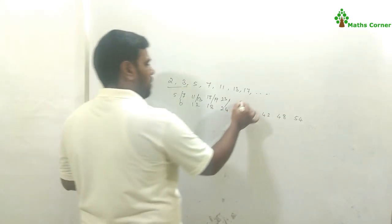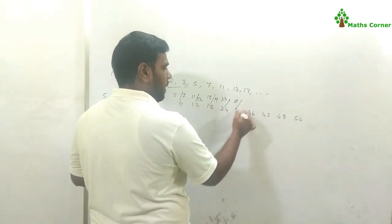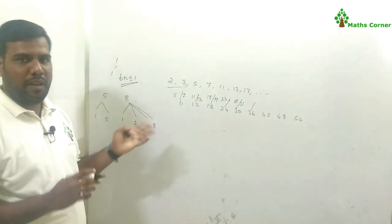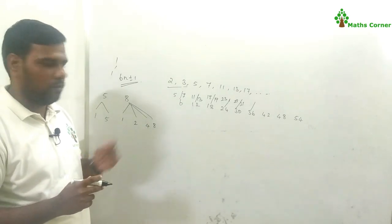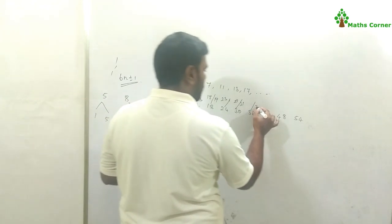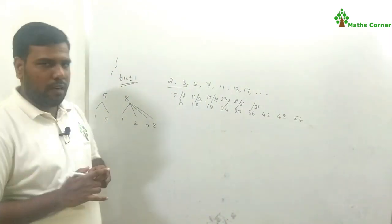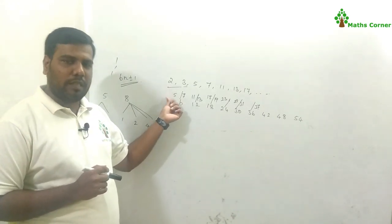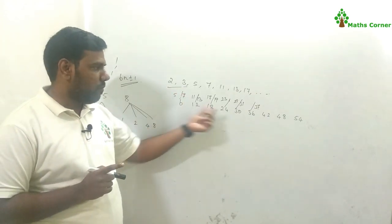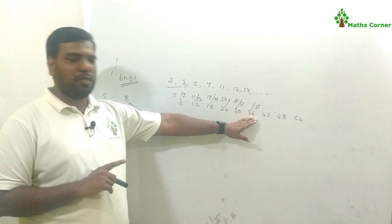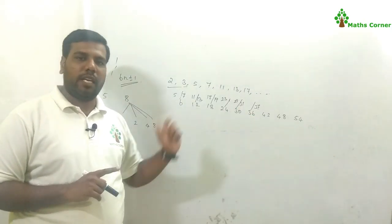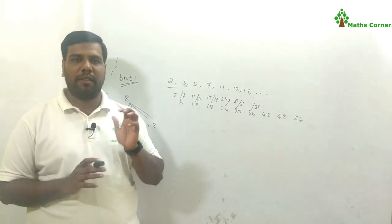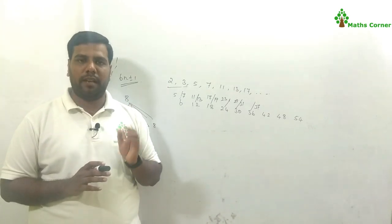For example: 30 — the previous number is 29, that's prime; 30's next number is 31, that's also prime. For 36: the previous number is 35, which is divisible by 5 and 7, so not prime; the next number is 37, which is prime. So this is why we know the condition: prime numbers follow the 6-multiple minus 1 or plus 1 rule.